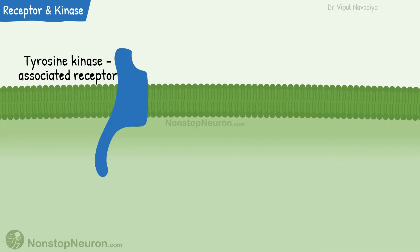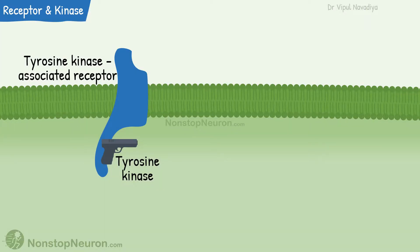This is a tyrosine kinase associated receptor. Such a receptor itself has no enzymatic activity, but it associates with a separate molecule that has tyrosine kinase activity. That's why they are called tyrosine kinase associated receptors.